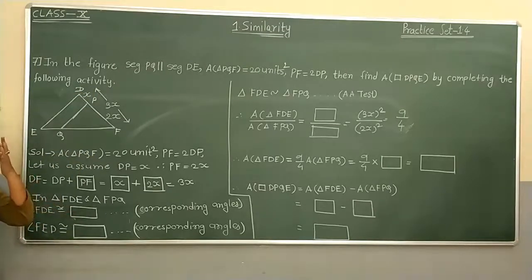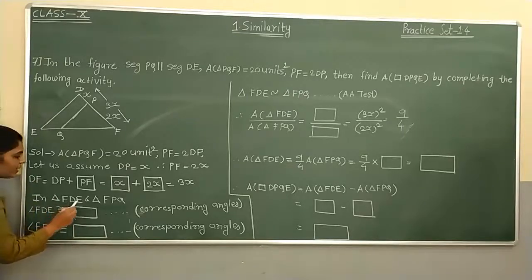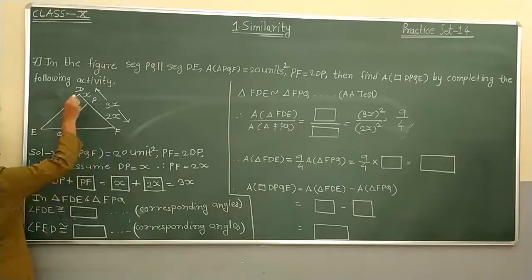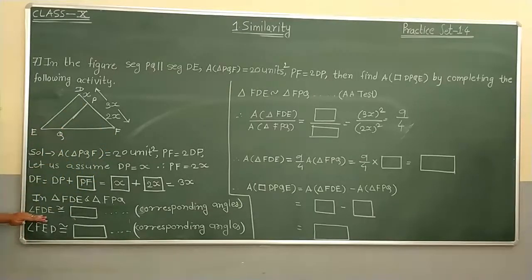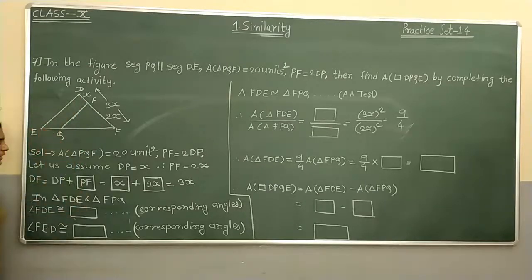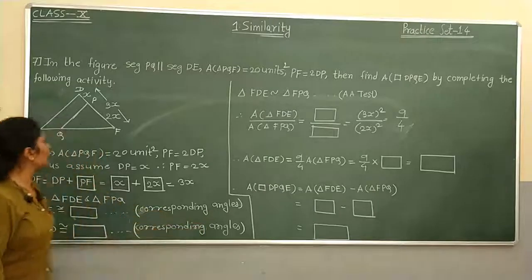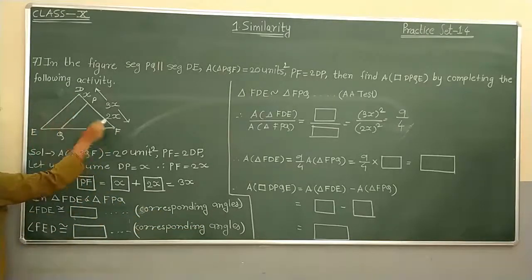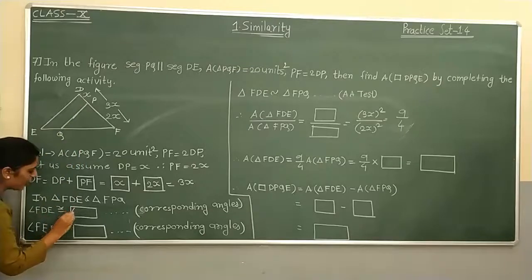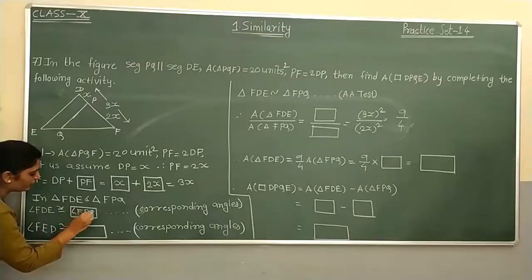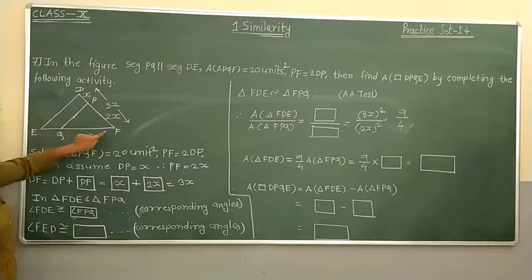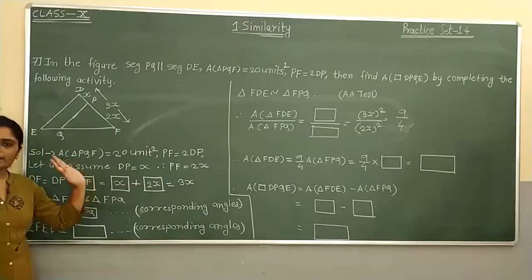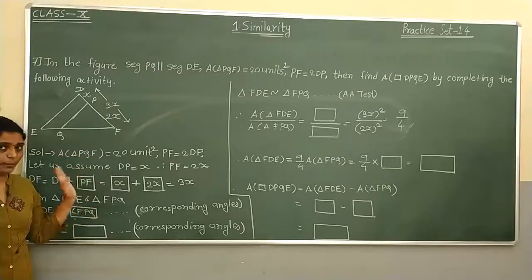Now we need to show triangle FDE and triangle FPQ are similar. In the two triangles: angle FDE is congruent to angle FPQ, as corresponding angles since PQ is parallel to DE. Angle FED is congruent to angle FQP, also corresponding angles.